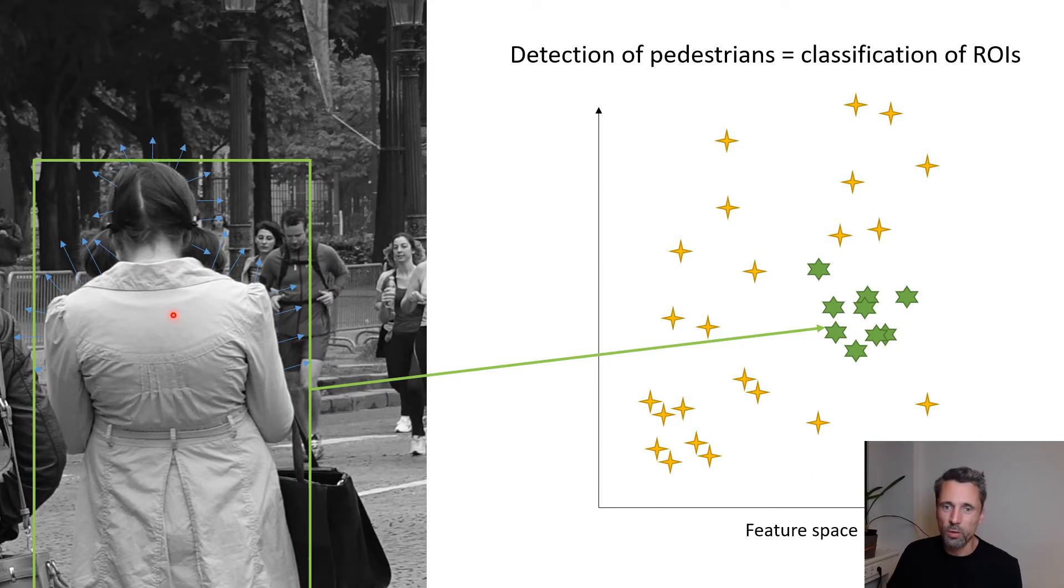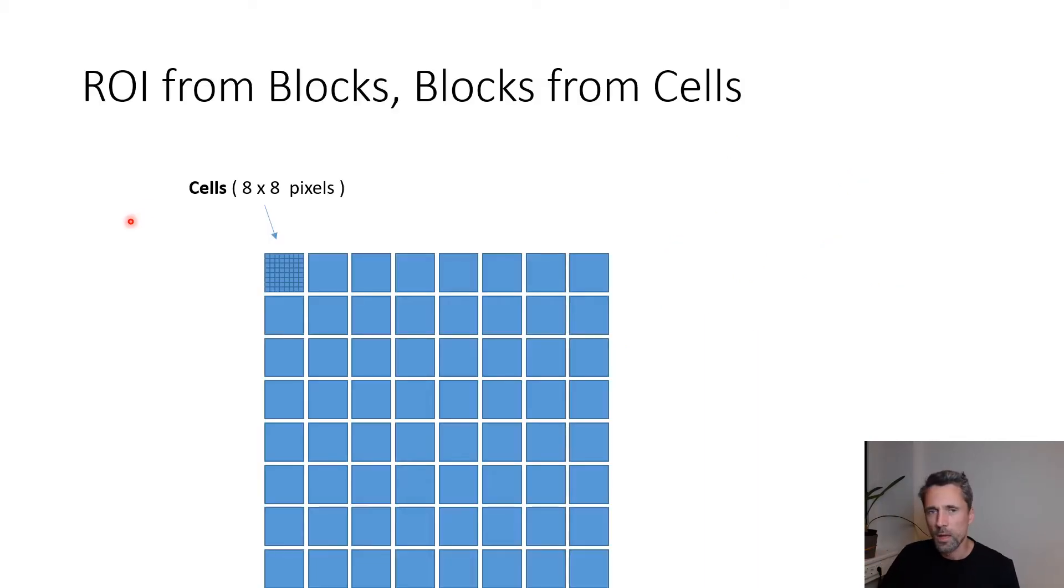It also will describe other elements in this ROI, like objects in the background or even gradients that happen to be on the body of the person. How do we create the feature vector for a given region of interest? We'll divide the actual image into so-called cells, then concatenate cells into blocks, and those blocks within this region of interest form the feature vector.